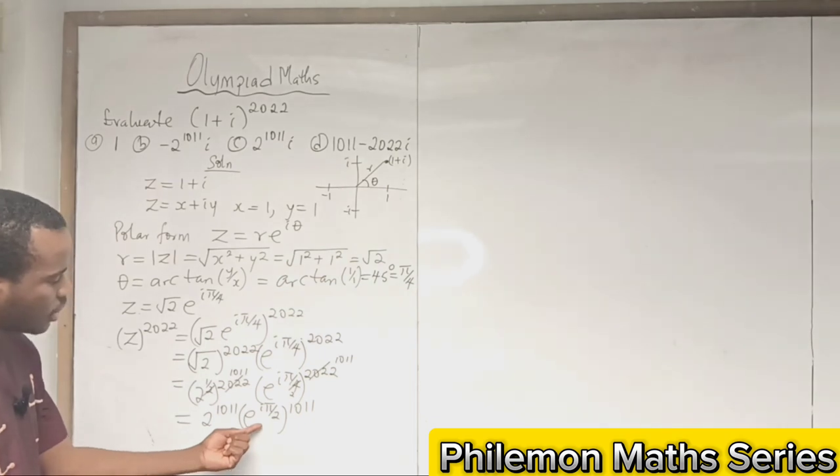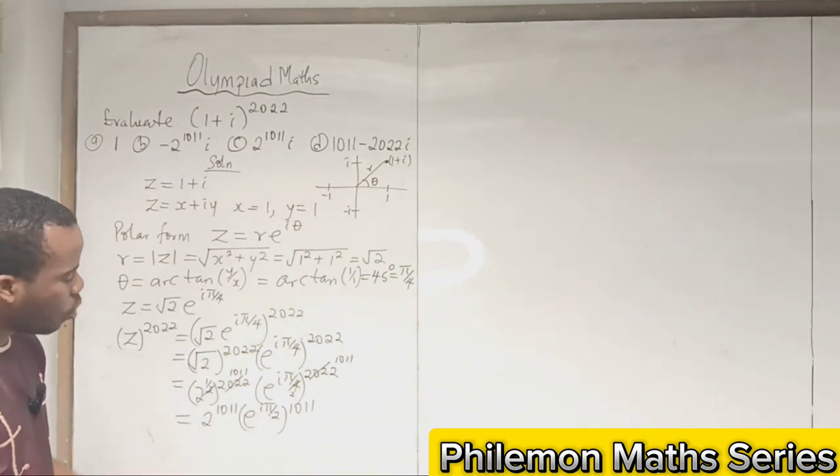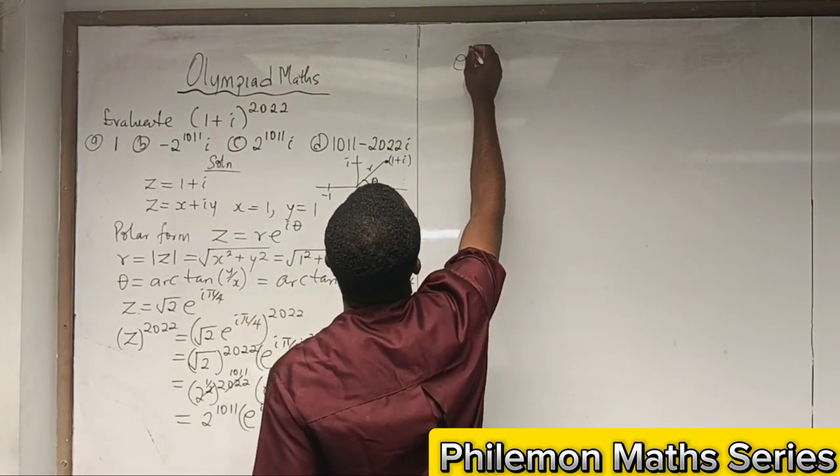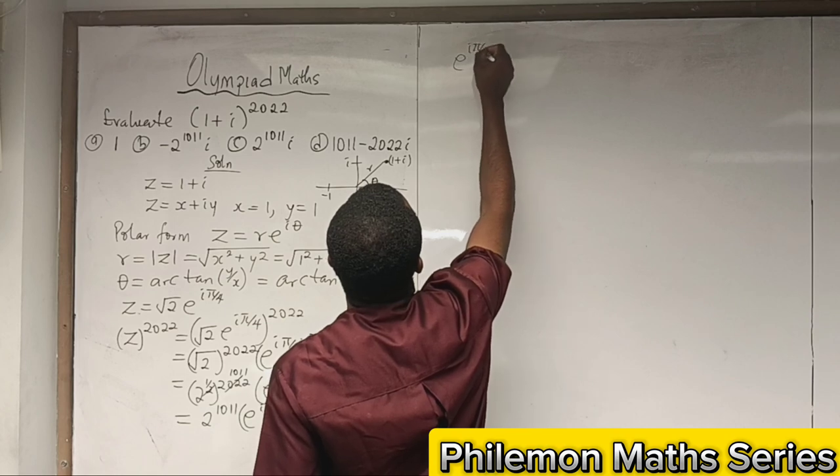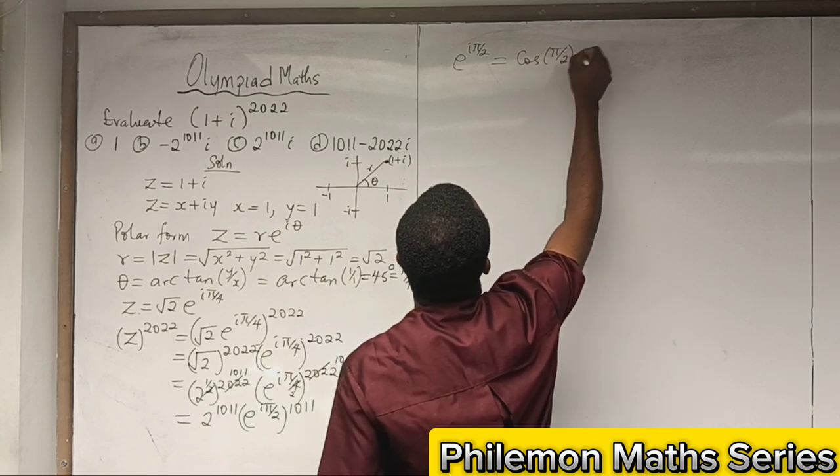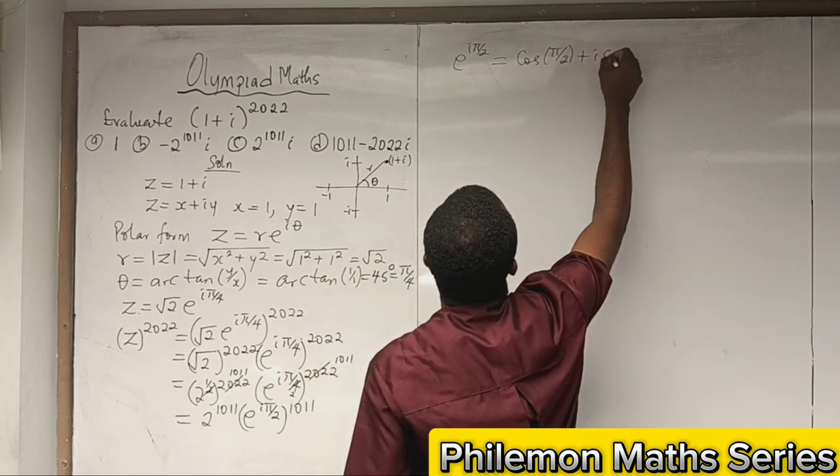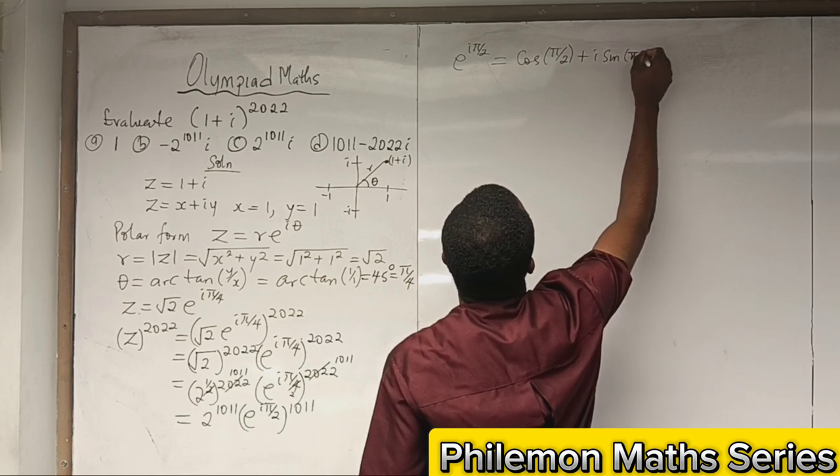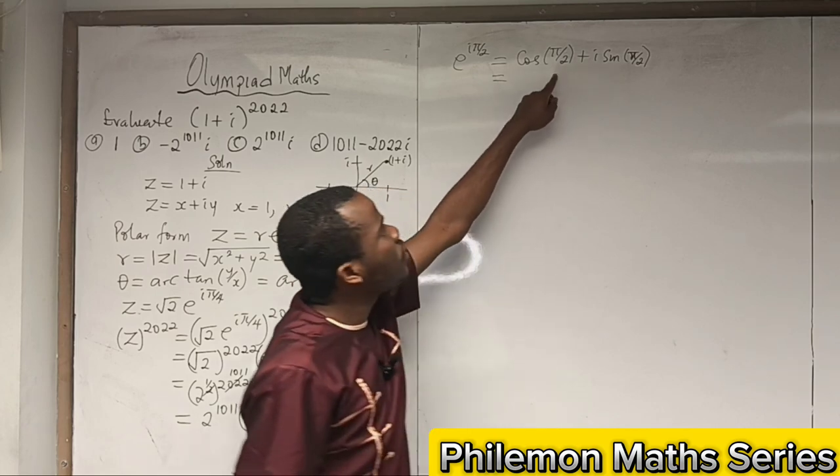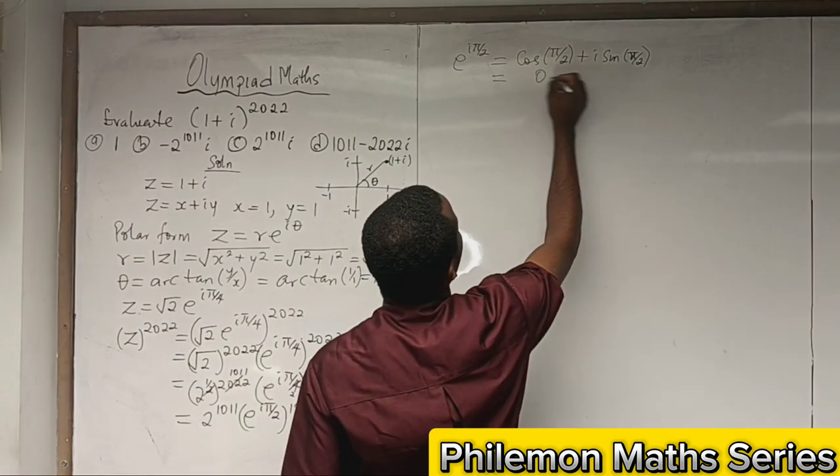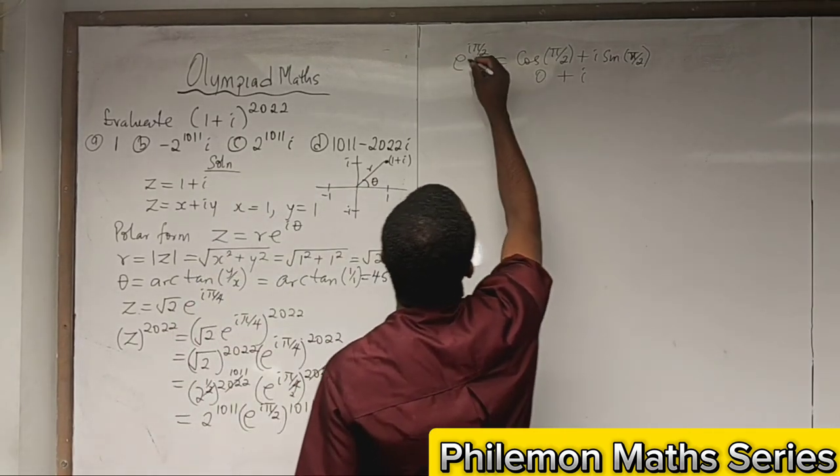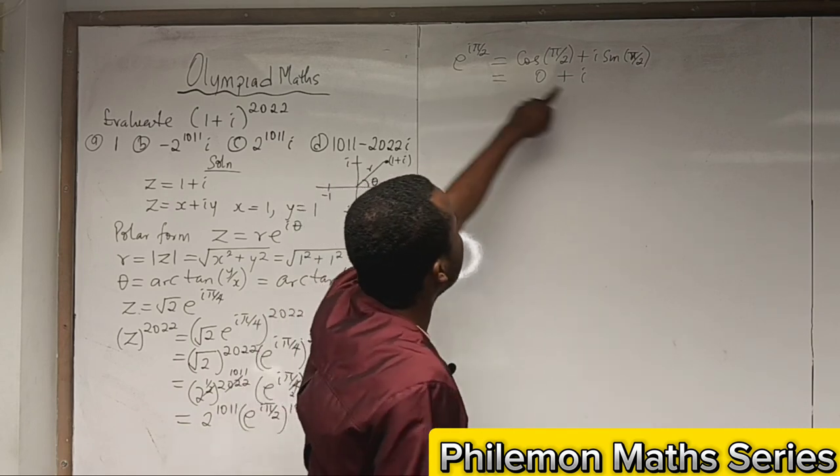For the exponential part, e^(i*2022π/4) = e^(i*1011π/2). Now e^(iπ/2) = cos(π/2) + i*sin(π/2). Cos(π/2) is 0, and sin(π/2) is 1, so this equals i. Therefore e^(i*1011π/2) = i^1011.